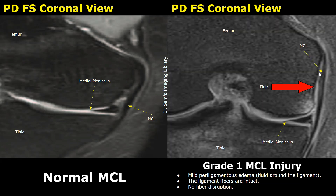Here is another case showing a grade 1 MCL injury. The MCL is surrounded by some hyperintense bright fluid. The ligament fibers are intact, and no tear or disruption is present in the ligament. A bone contusion is also present in the femur.